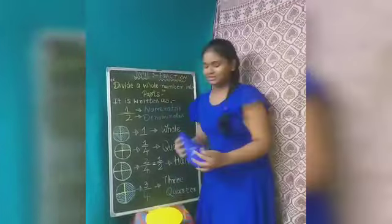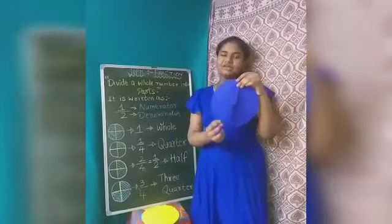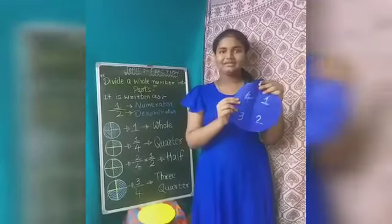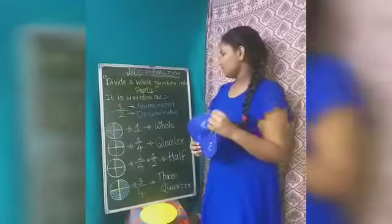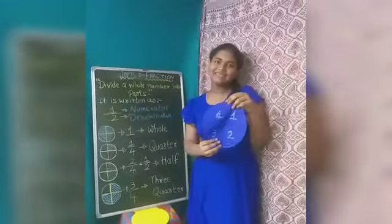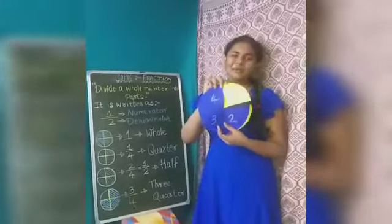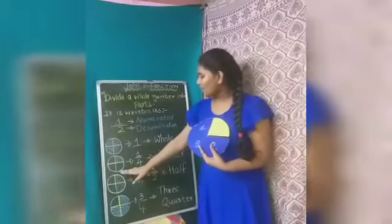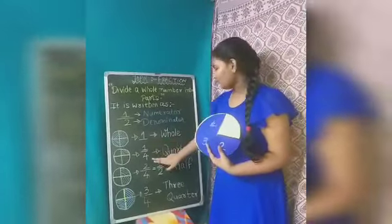So now this is a whole circle. Let's divide it. Here I have divided it into 4 parts. Now we will shade it using color. Here 1 part is shaded, which is a quarter, and it is written in the form of 1 upon 4.